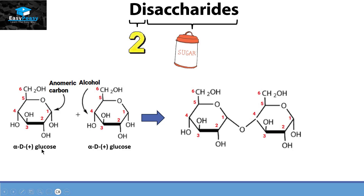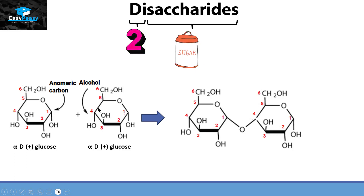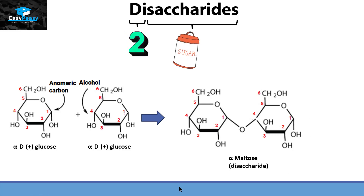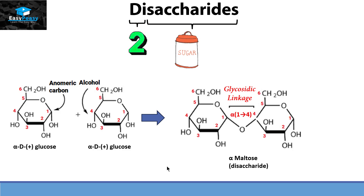In this picture, we have alpha-D glucose, and its anomeric carbon — carbon number one — is reacting with the alcohol present on carbon number four of another alpha-D glucose unit. They are making a bond with each other, forming the specific disaccharide called alpha-maltose. The bond they make is called a glycosidic linkage, and in the maltose unit it is specifically called an alpha-1,4 glycosidic linkage.